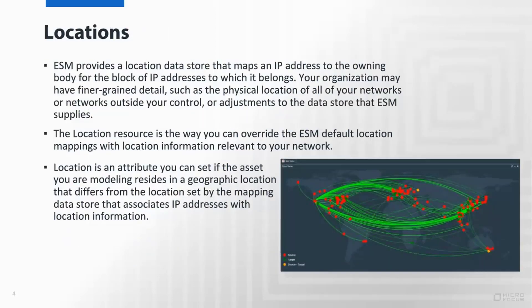Locations are one of the simpler resources within the asset model. It is simply an entry that contains geographic information such as latitude and longitude for an individual point. These locations are used to override any dynamic geo mapping that might occur based on the IP observed in the event stream belonging to a particular zone, for example.